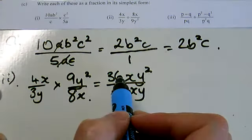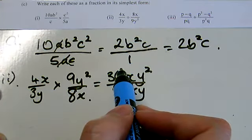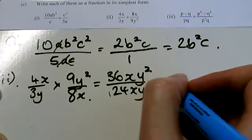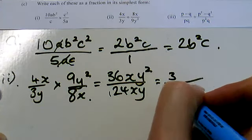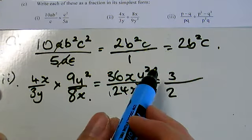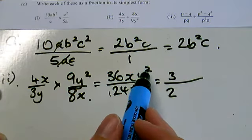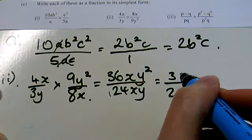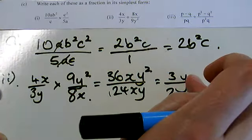This is a multiple of 12, so that's 3 over 2. I've got an x at the top and bottom, so they're going to cancel, and I've got y squared on the top and y on the bottom, so that'll leave just a y on the top. So it's 3y over 2.